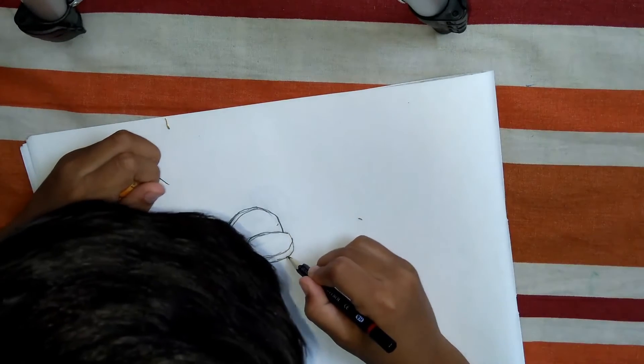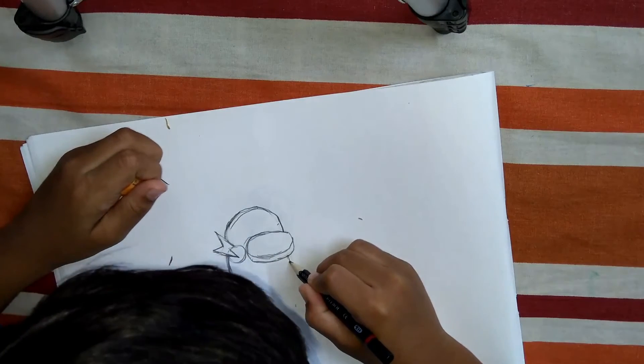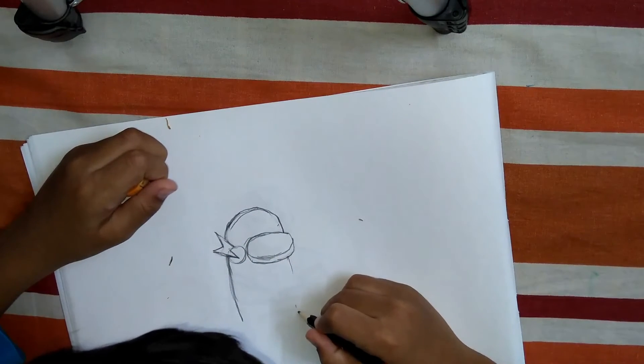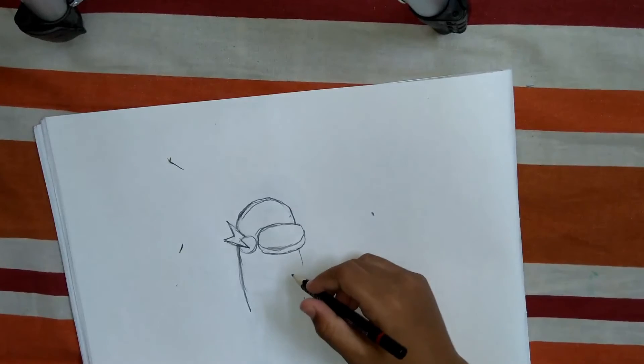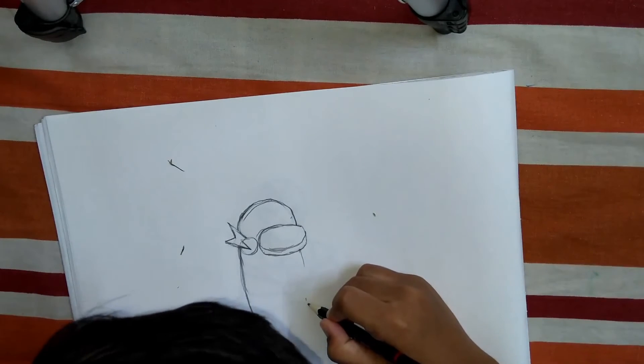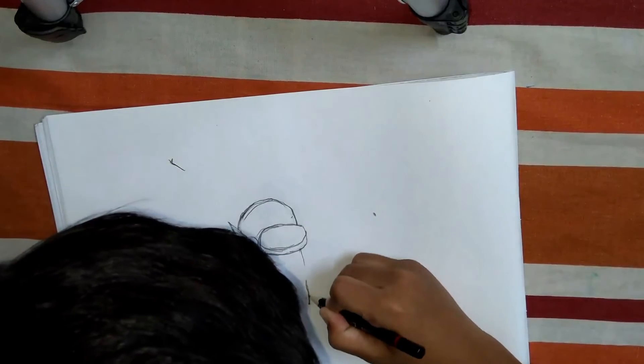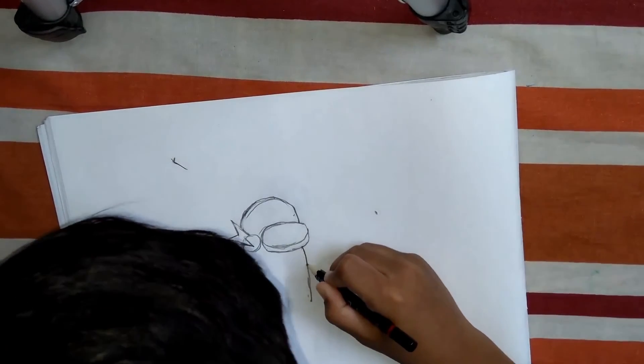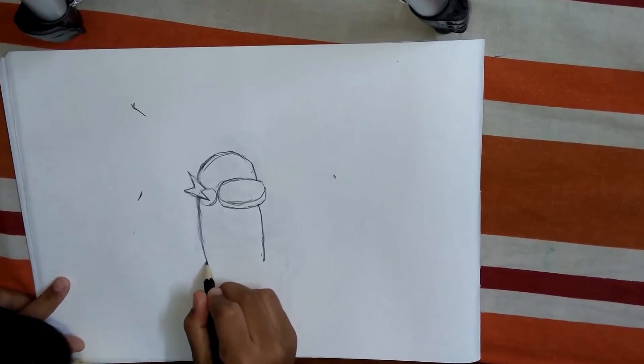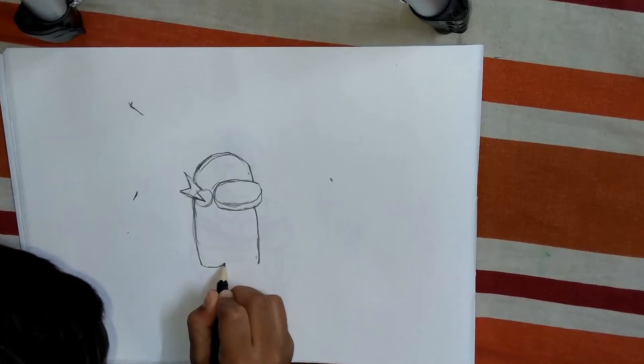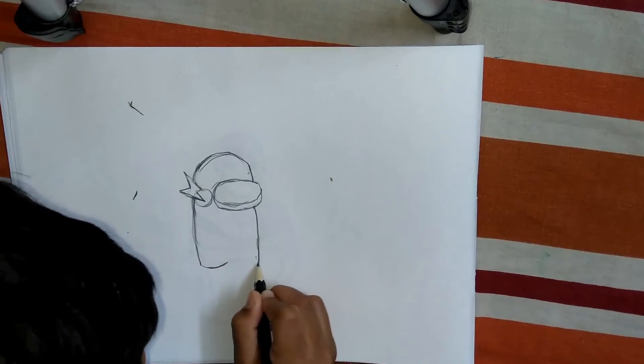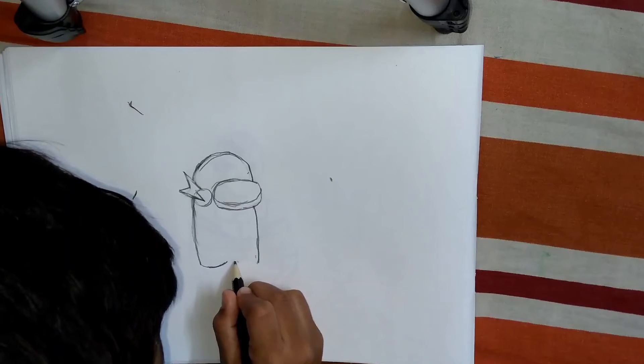Now I'm going to draw the body on the right side. Come like this and draw two curved lines like this, and one more from here.